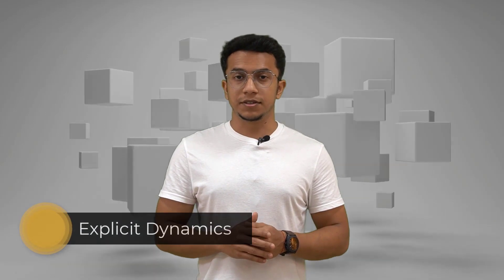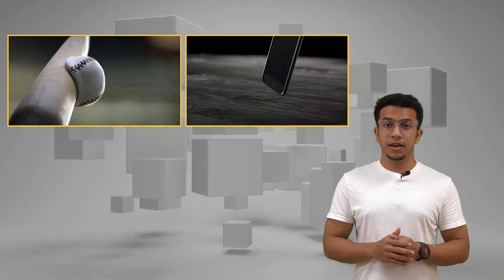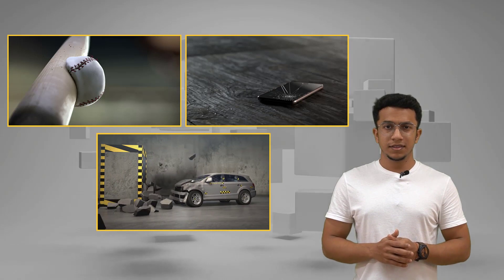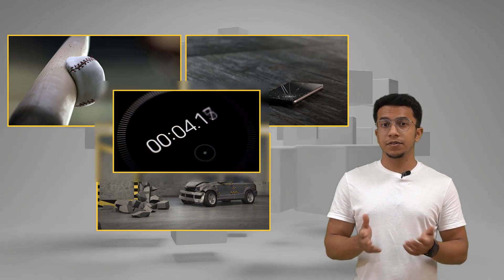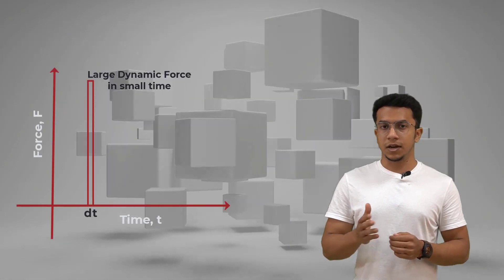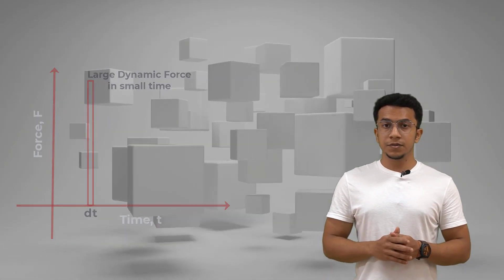Explicit dynamics allows us to capture the physics of short duration events. Consider a baseball hitting the bat, or your phone falling and hitting the floor, or a car crashing into a barrier. These events occur in milliseconds or even shorter time frames, but the objects involved experience very large transient dynamic forces.